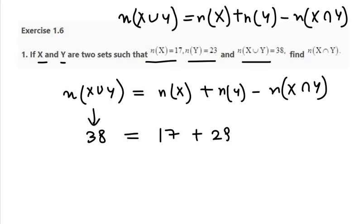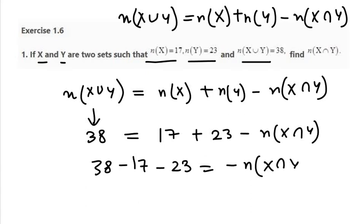Then take away the value we need to find. So 38 take away 17 take away 23 and minus n(X intersection Y). 38 minus 17 minus 23 gives us minus 2 and minus n(X intersection Y). So minus minus gets cancelled.